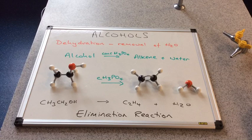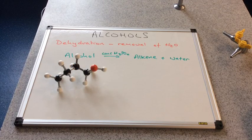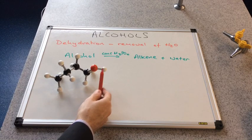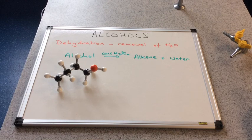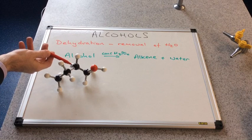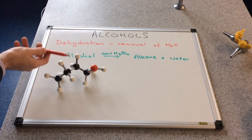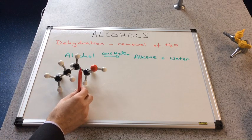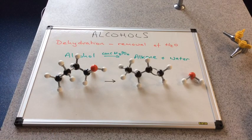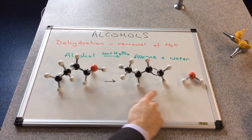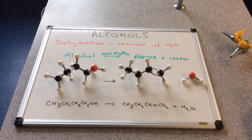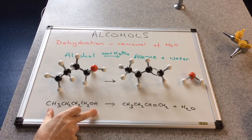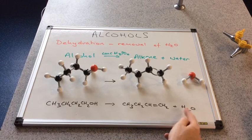We're going to look at a slightly more complicated alcohol: butan-1-ol. If you just apply that simple rule it's very straightforward. We're reacting this with concentrated phosphoric acid, which is going to remove water. We take the OH out, and the only available adjacent carbon gives us a hydrogen, so the double bond forms there, and we make but-1-ene and water. There's the chemical equation.